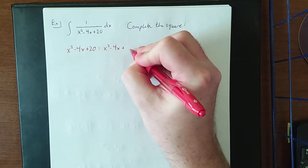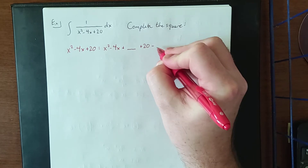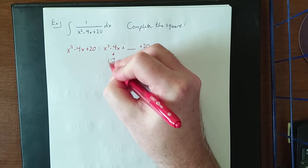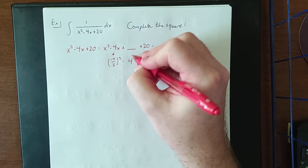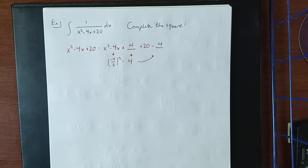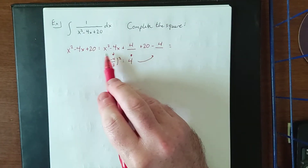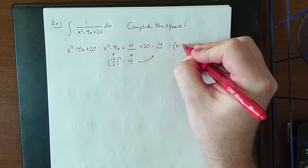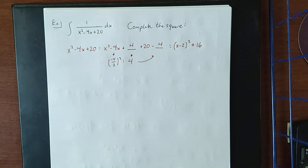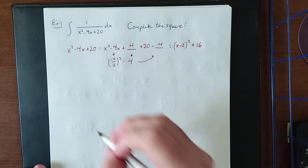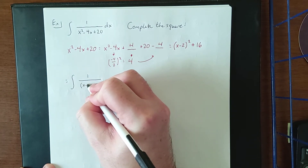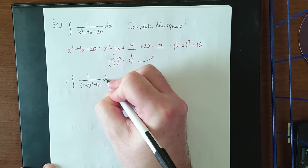Starting with x squared minus 4x plus 20: we take the coefficient of x, which is −4, divide by 2 to get −2, and square it to get 4. Adding 4 completes the square; subtracting 4 balances it. So x squared minus 4x plus 4 is the perfect square (x minus 2) squared. Then plus 20 minus 4 gives plus 16, so the denominator becomes (x minus 2) squared plus 16.